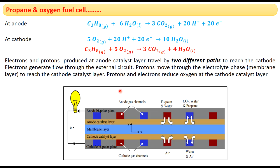At the anode, oxidation occurs: C₃H₈ + 6H₂O → 3CO₂ + 20H⁺ + 20e⁻. Propane and water mixture fed through the red inlets undergo oxidation, producing CO₂, 20 protons, and 20 electrons. The 20 protons flow through the membrane layer to the cathode, while the 20 electrons flow through the external wire and load to reach the cathode.